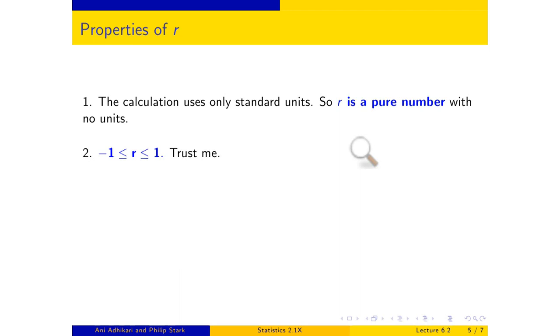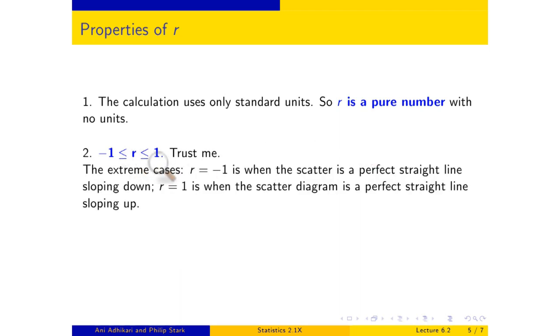Let's say what we've said about the extreme cases. When r is plus 1, you have a scatter diagram that is a perfect straight line sloping up. When r is minus 1, you have a scatter diagram that is a perfect straight line sloping down.